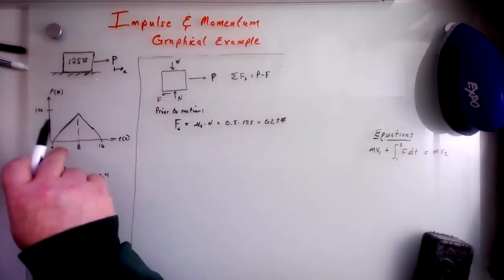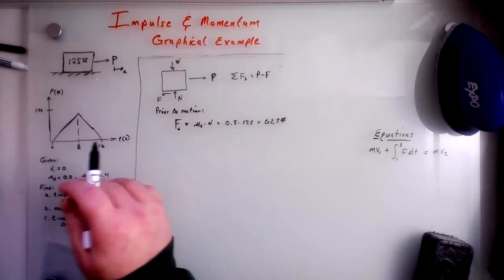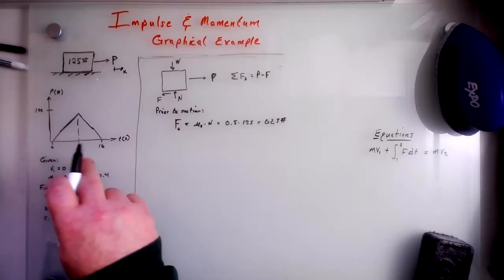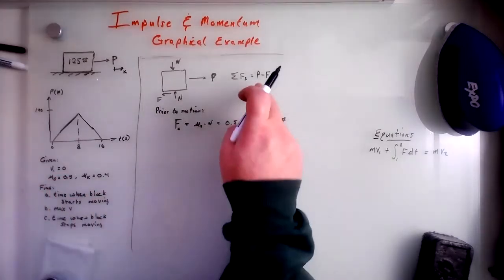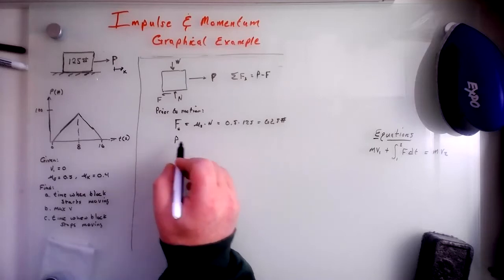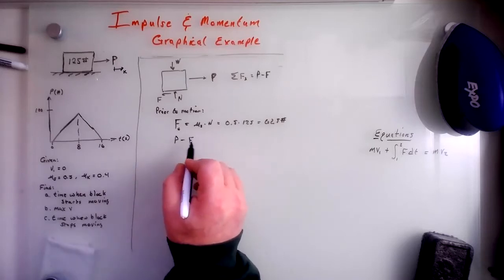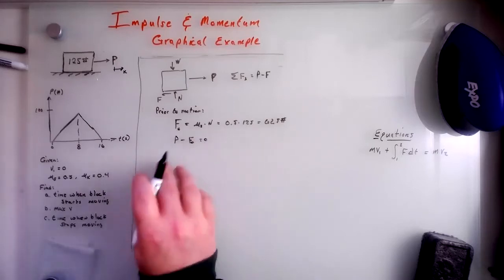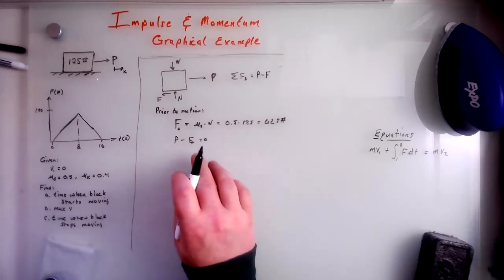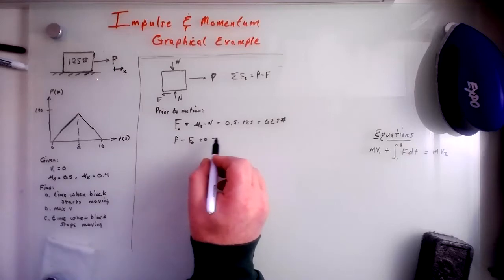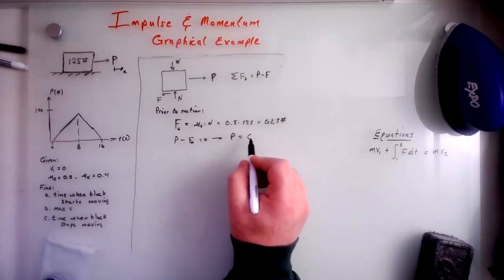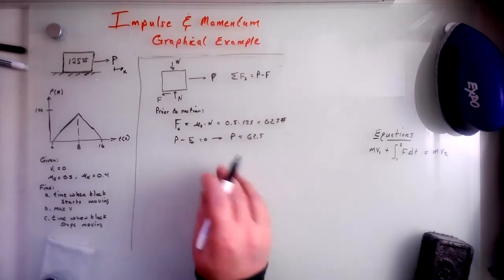Well, p is increasing. So at motion, we would say that p minus f equals zero, right? So they're the same. And this necessarily means that p is equal to 62.5.